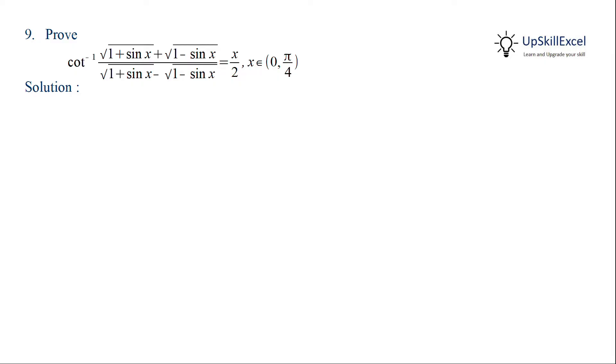x belonging to 0 to pi by 4 implies that x by 2 belongs to 0 to pi by 8, and in this domain cos x by 2 is greater than sin x by 2.